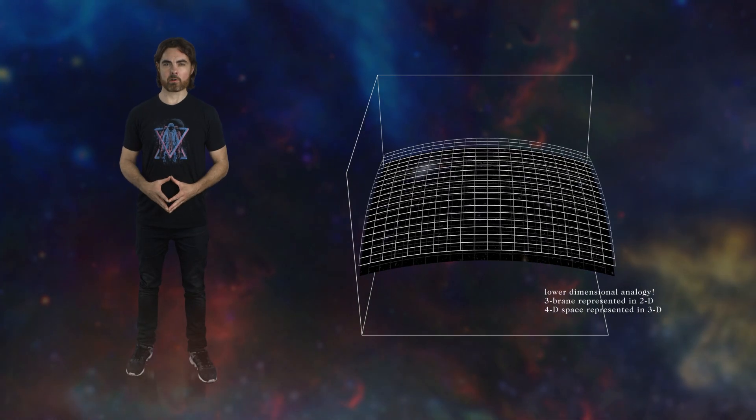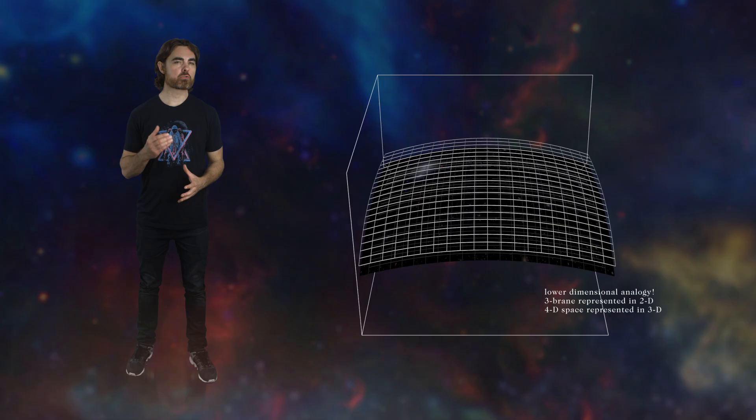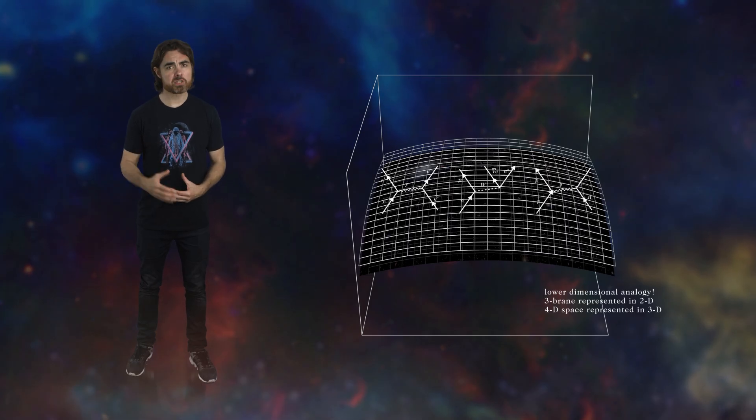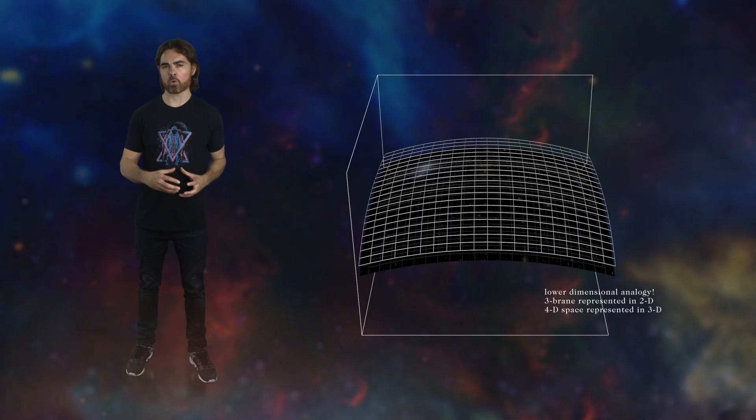But you can also flip this idea around. You can imagine a three-dimensional brain, a three brain, embedded in a spacetime with four spatial dimensions, where the extra dimension of space is extended rather than compact. Most of the stuff in such a universe, including all of the fundamental forces besides gravity, would be restricted to the three brain. Tune your theory just right, and you get normal physics for matter and radiation in three spatial dimensions. For example, the usual inverse square law for light.